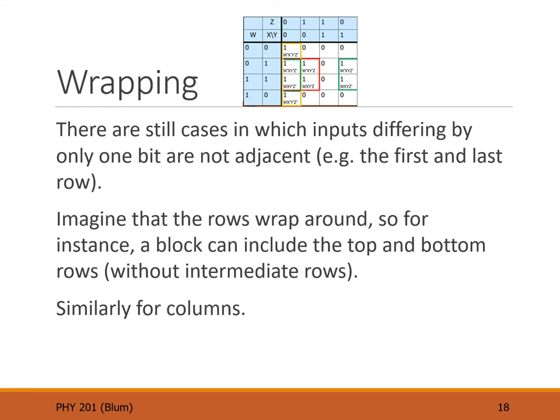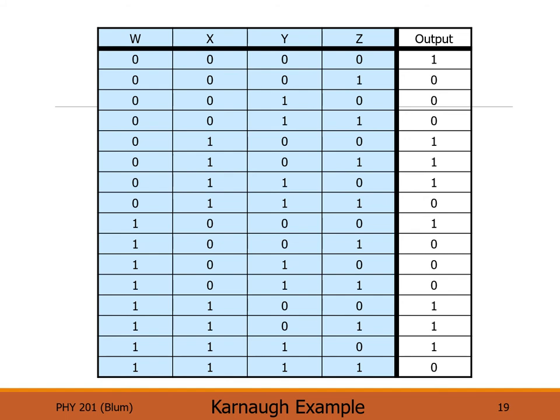Here we're considering a truth table as an example of a Karnaugh map simplification. We have four inputs W, X, Y, Z. With four inputs there are 2⁴ = 16 possible combinations, put in binary counting order from zero to 15. There are outputs for those inputs — this is just a possible output, nothing special, just an example.